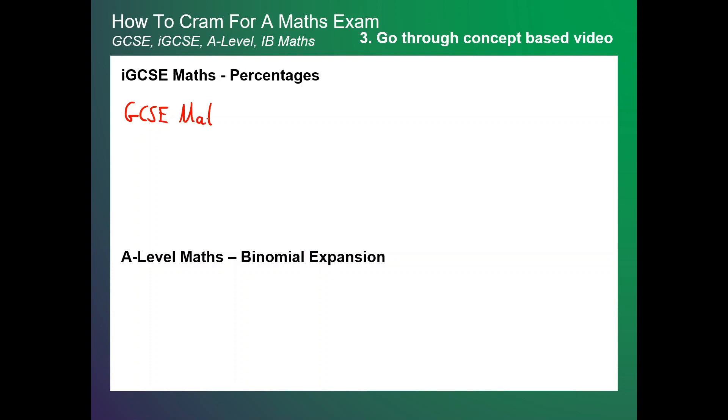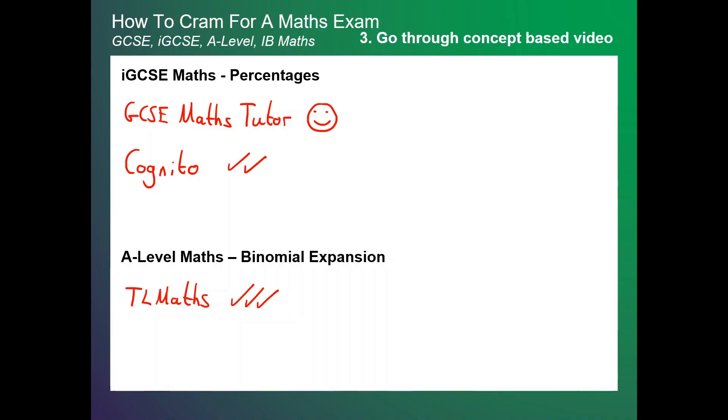Step three is to find a tutorial video on that particular concept. For IGCSE maths, the GCSE Maths Tutor and Cognito are very good at explaining key concepts — use the phrase you underlined to search for the right video. If you're doing A-level maths paper one, I'd recommend TL Maths, which is really good for going through very specific concepts. You watch that video on that concept, then come back to my exam-question video and actually attempt the question with that concept behind you. Then continue the video, same process — underline the phrase, find a concept-based video, then return to the exam questions.